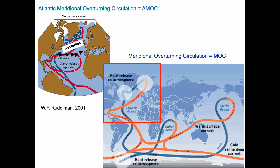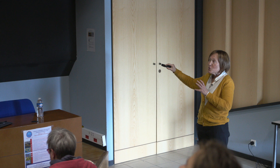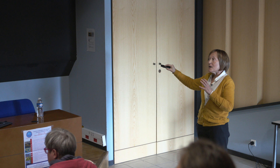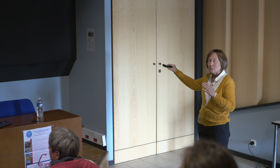To equilibrate, to counterbalance this asymmetry of energy, we have the ocean currents and winds, and particularly the Gulf Stream. The Gulf Stream is the North Atlantic part of the Atlantic Meridional Overturning Circulation, or AMOC. This Gulf Stream brings humidity and warmth to the high latitudes of the Northern Hemisphere.